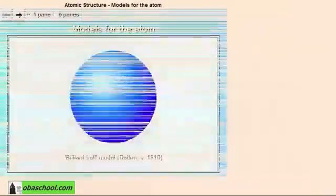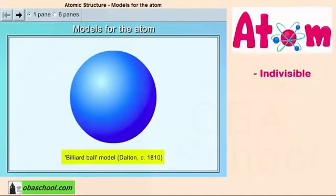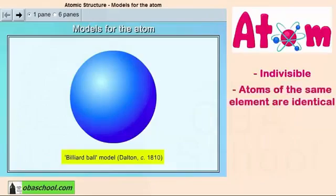The first model was proposed by Dalton about 200 years ago. His billiard ball model showed that atoms are indivisible and that atoms of the same element are identical.